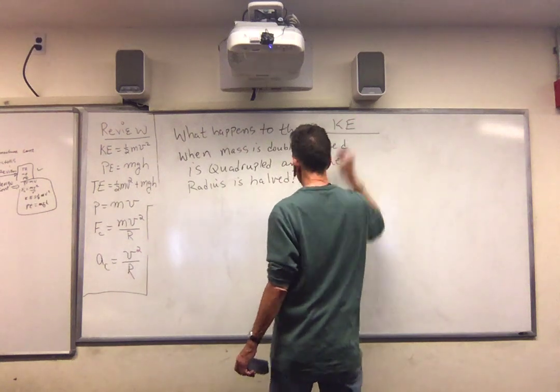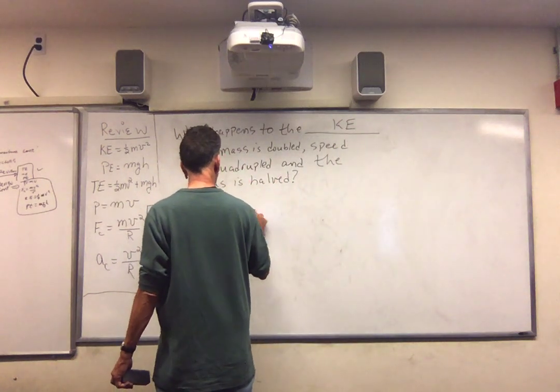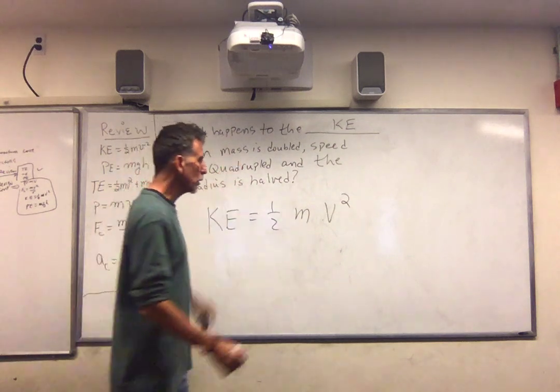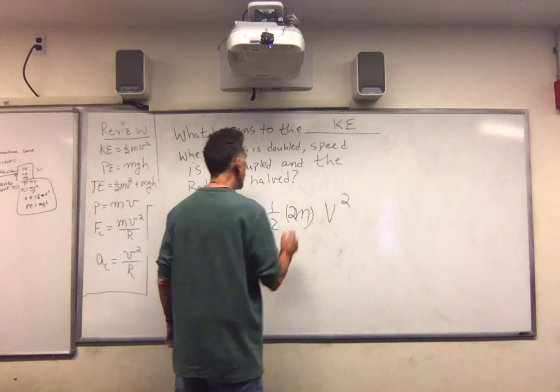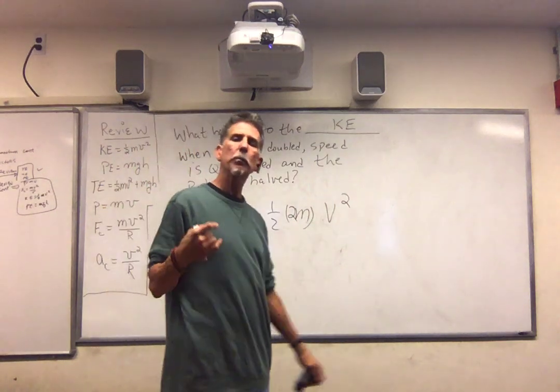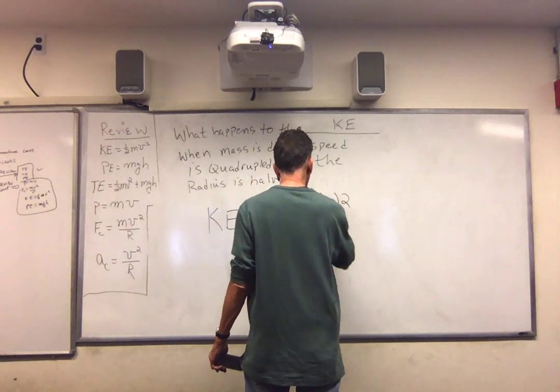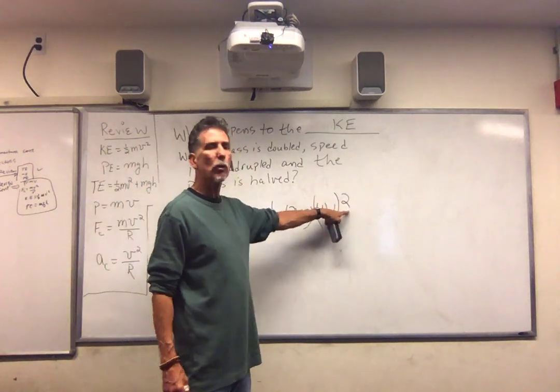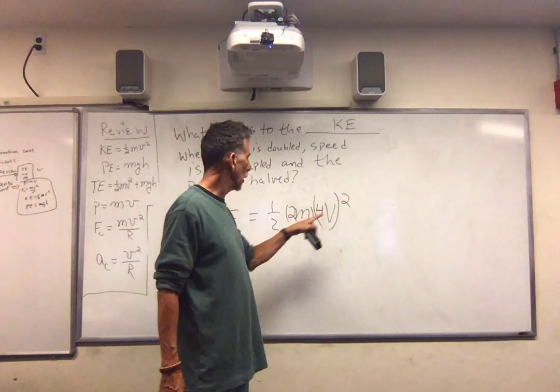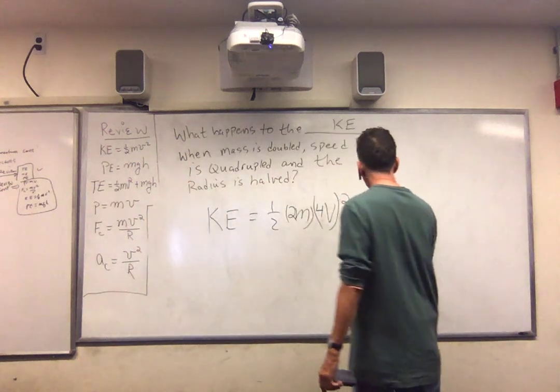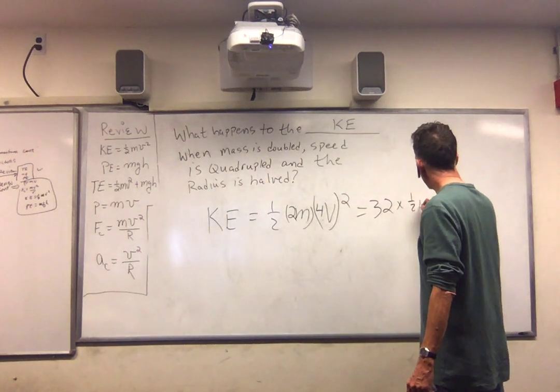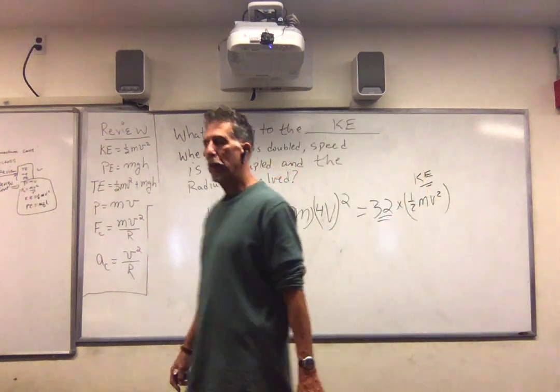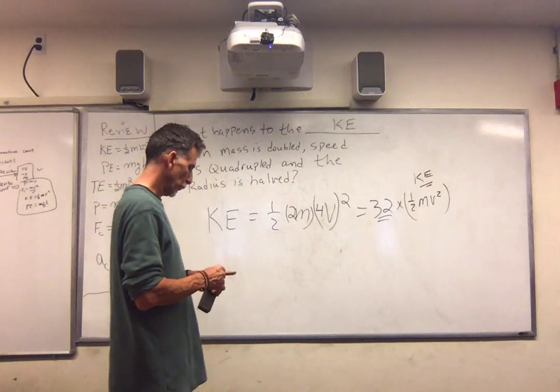Once again, kinetic energy. One half mv squared. What am I doing to the mass? Mass is going to be doubled. So we're going to take 2m. What am I doing to the speed or velocity? It's quadrupled. Quadrupled simply means multiply by four. But then we have to square that. And the radius is halved. There's no radius in kinetic energy. So what is four squared? Four squared is 16. Two times 16 is 32. So this is 32 times one half mv squared. But one half mv squared is kinetic energy. So the kinetic energy is increased by 32 times.